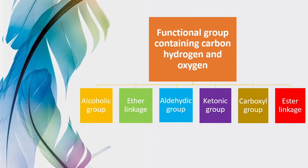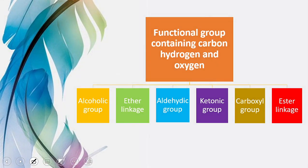So depending upon the presence of carbon, hydrogen and oxygen, we have these different types. The first one is alcoholic group, then ether linkage, aldehyde group, ketonic group, carboxyl group, and ester linkage. In sab ki kuch specific characteristic properties hain, specific groups hain jo kisi bhi alkyl radical ke saath jab attach ho jayega to wo kuch specific properties us compound ko dega. Sabse pehle hum dekhte hain alcoholic group ko.